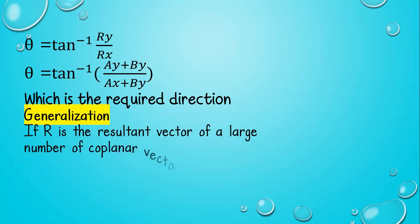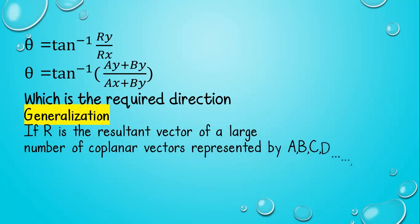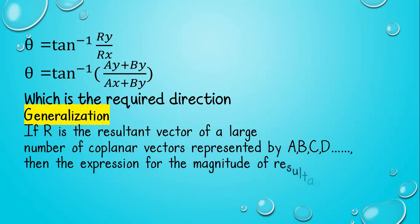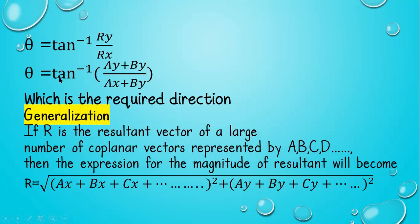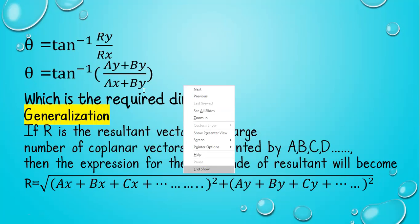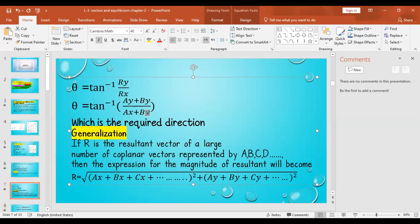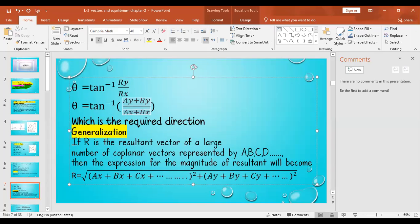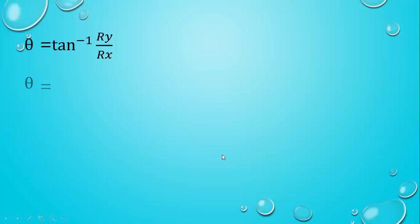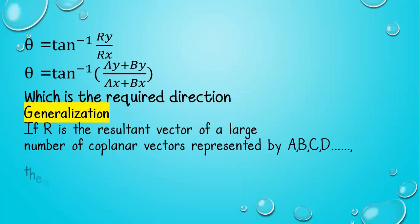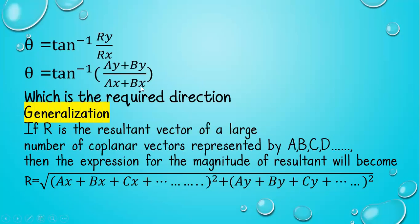If R is the resultant vector of a large number of coplanar vectors represented by A, B, C, D and so on, then the expression for the magnitude of the resultant vector becomes: |R| = √((Ax + Bx + ...)² + (Ay + By + ...)²). Square all X-components summed together, and square all Y-components summed together, then take the square root.